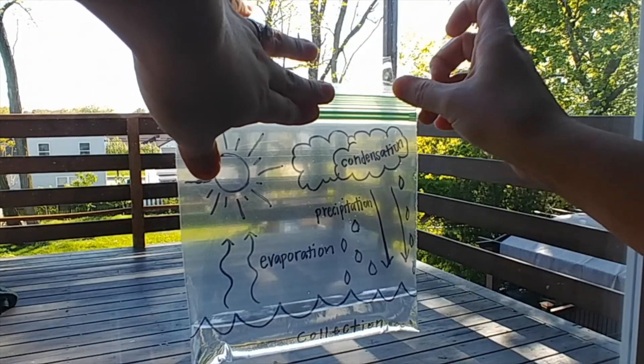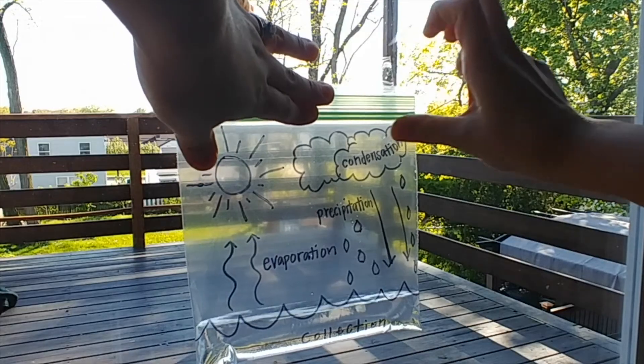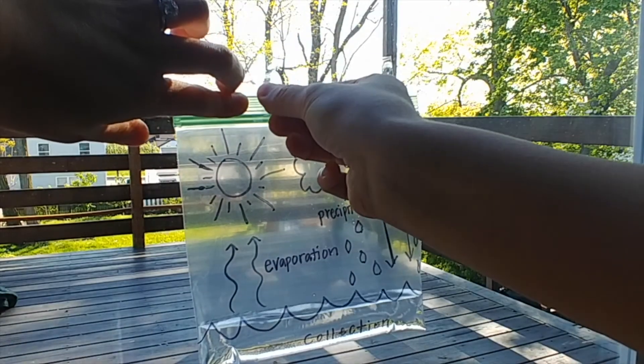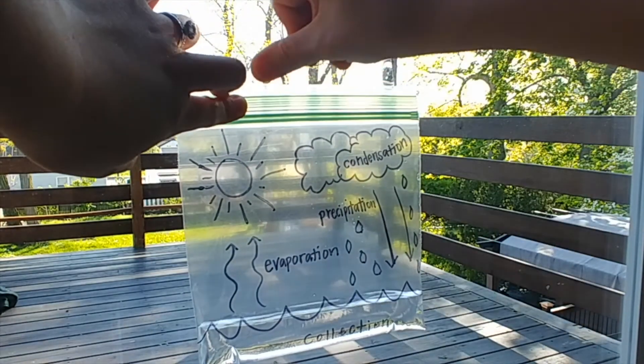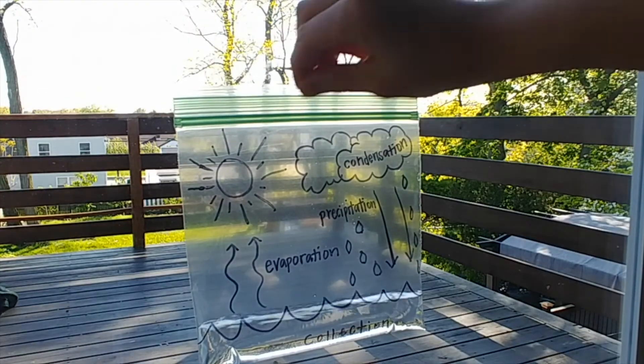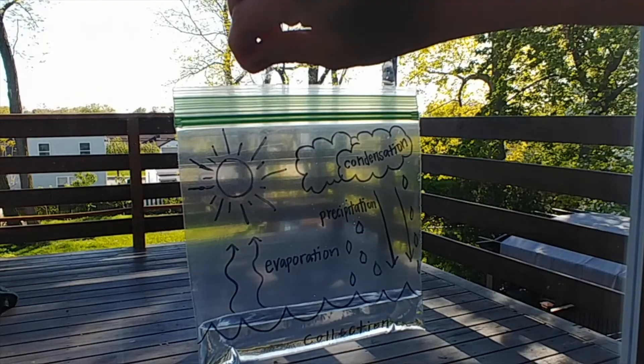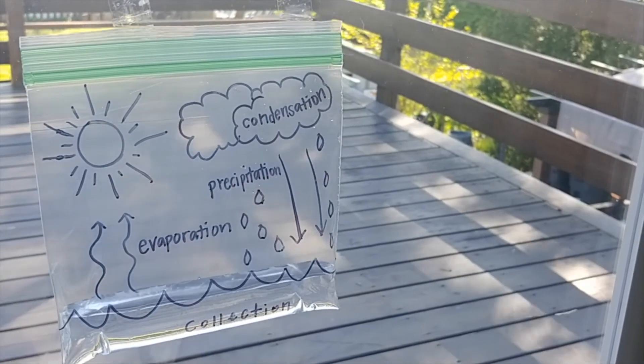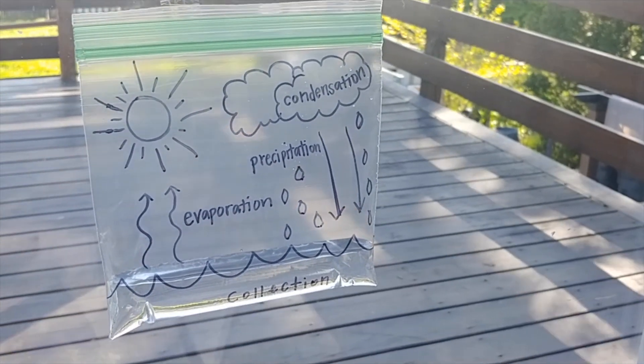And that's it! You have successfully created a model of the water cycle. Now all you have to do is wait a few days, and as the sun naturally heats the water inside the bag, you should be able to see the water go through all of the processes of the water cycle.